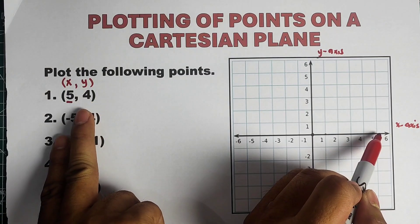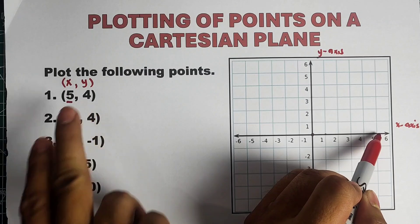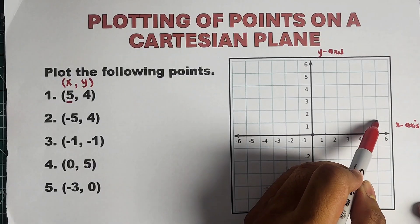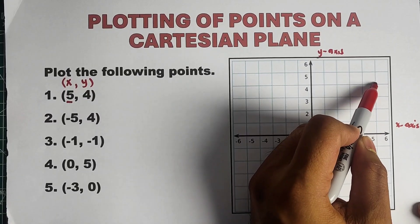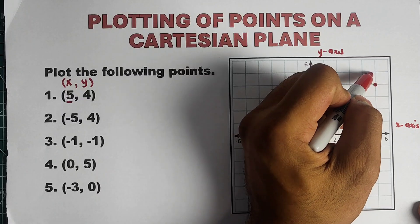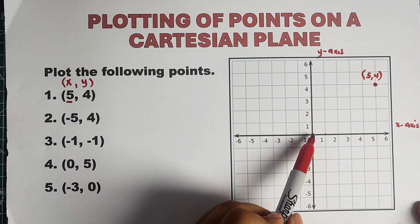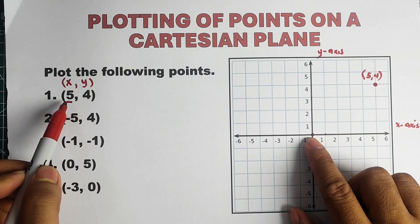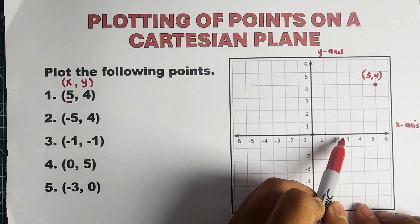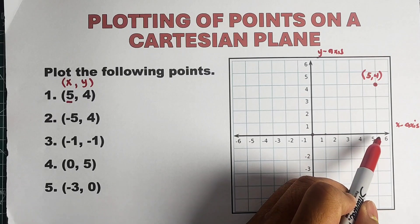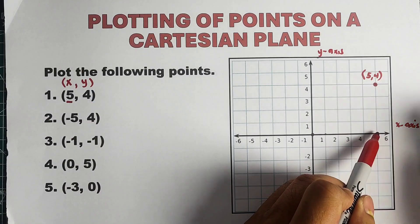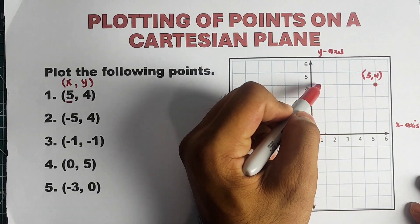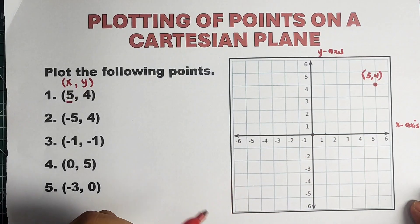We have the y-coordinate, which is equal to 4. So what are we going to do with 4? From here, we will move 4 units up because 4 is positive and located on the upper part of the y-axis: 1, 2, 3, and 4. This is now the first coordinate, which is 5, 4. To summarize: start at the origin, move 5 units to the right since x is positive, then move 4 units up since y is positive. And as you can see, this part is equivalent to 5 units and this part is equivalent to 4 units. So we are done with number 1.